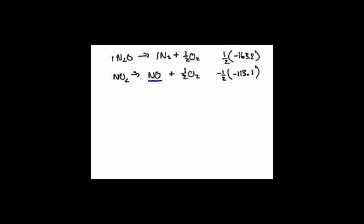N₂ plus O₂ makes 2NO, and we're going to leave that right as it is at plus 180.7. Now let's just double-check that this adds up to the reaction I want. There are going to be some things that cancel. I see N₂ here and N₂ here — they're on either side, so I can cancel them. I also see ½O₂, ½O₂, and an O₂ here. ½ plus ½ is 1, so these cancel that O₂. And I have N₂O plus NO₂ makes 3NO — that's the target reaction.